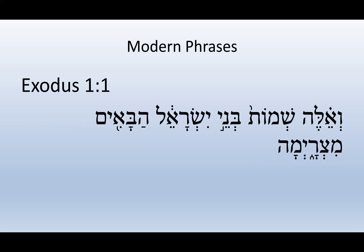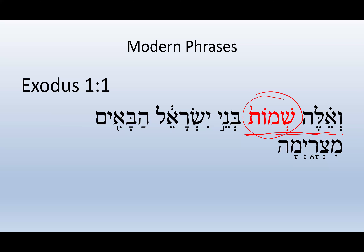For Exodus, we have 'and these are the names of the sons of Israel, the ones going into Egypt — entering into Egypt.' Here's the directional hey: Egyptward. Mitzrayim is Egypt. For Exodus, Shemot is the name. The full name would be Elishemot or Ve'Elishemot — 'and these are the names' — or you can just say 'names.' That's what they call the book of Exodus, taken from the first verse.